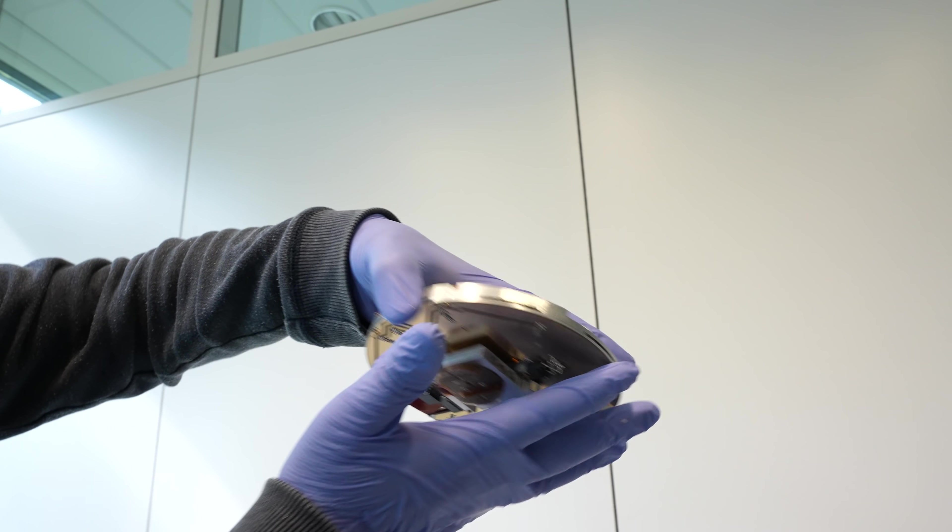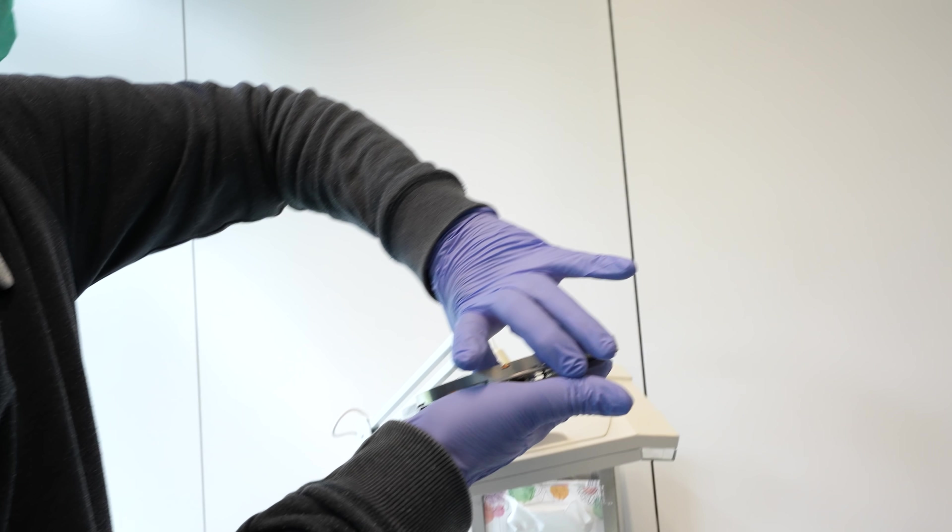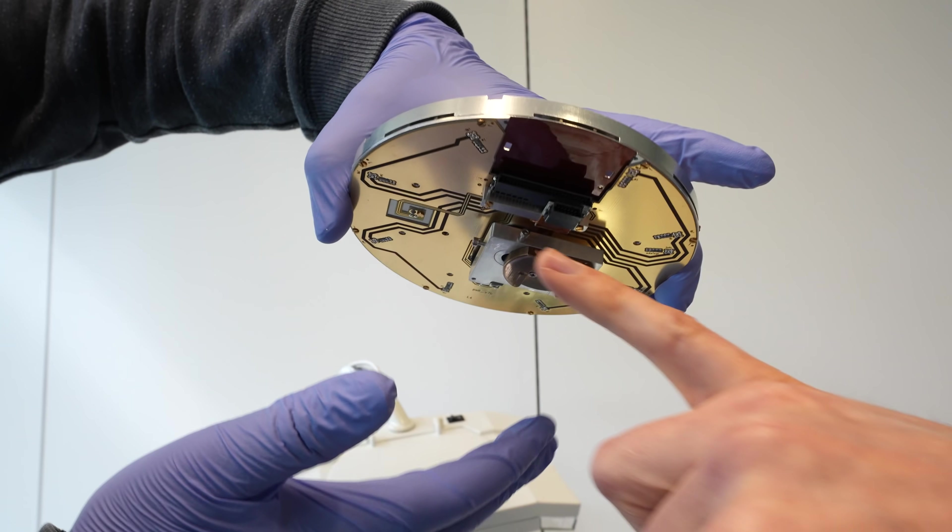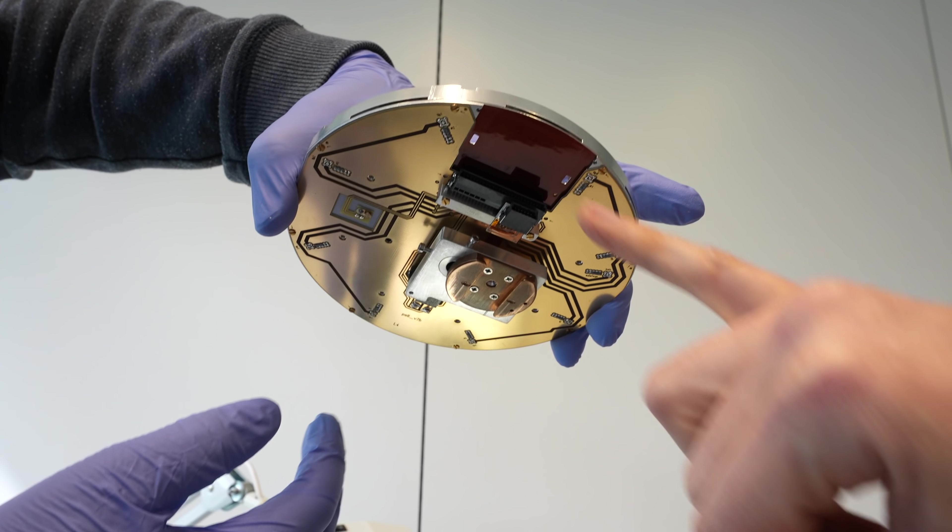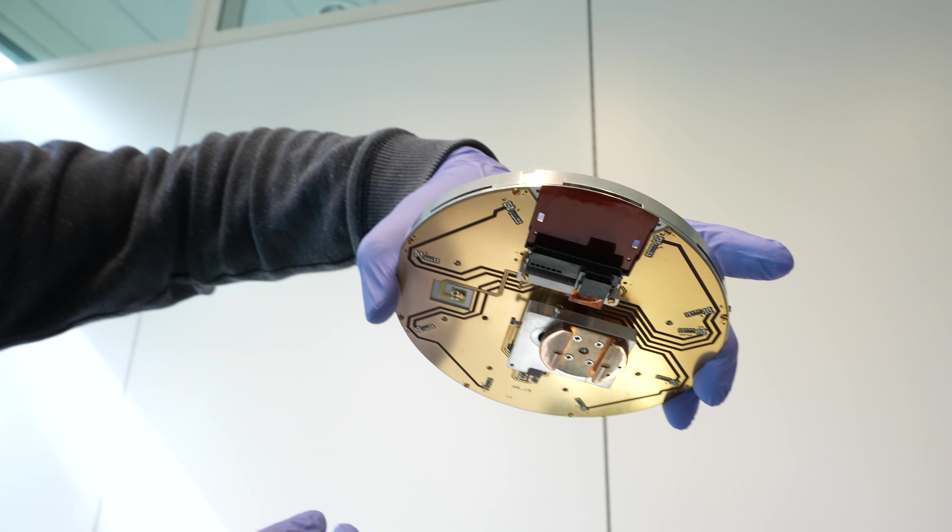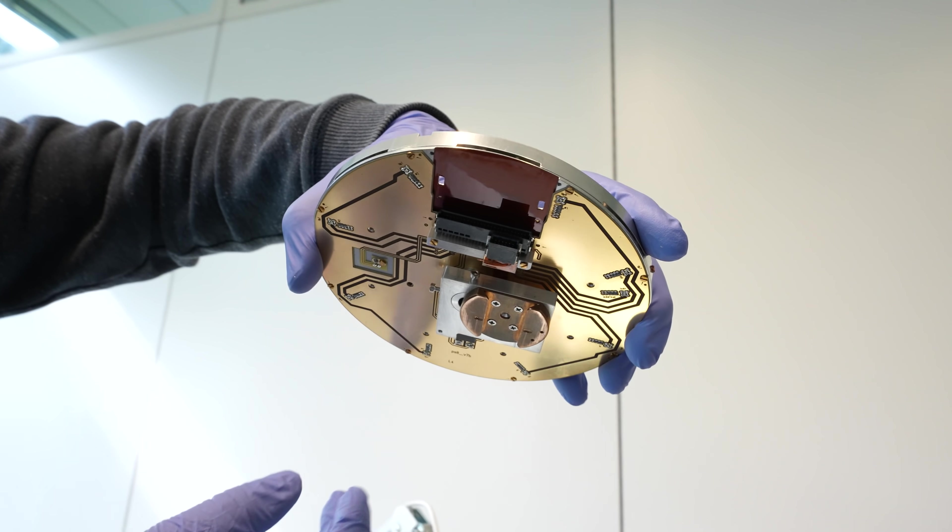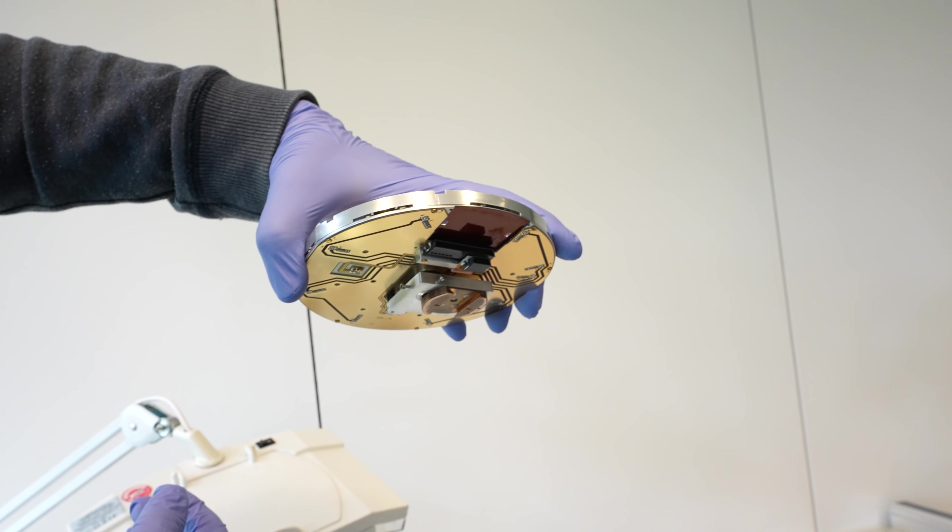After everything is prepared the probe shuttle will now find its way finally back into the SEM. At the bottom of the probe shuttle you can see this connector which makes electrical contact for those probing needles and also so we are able to apply voltages to the needle for the later analysis.